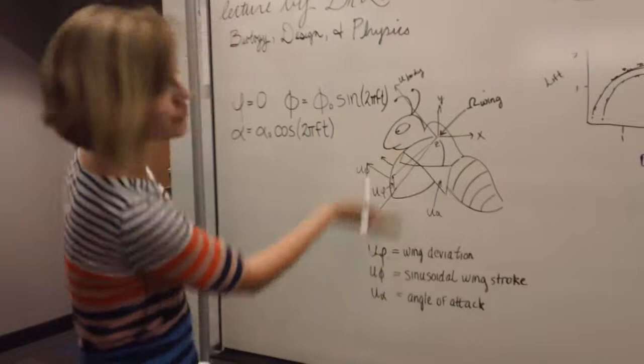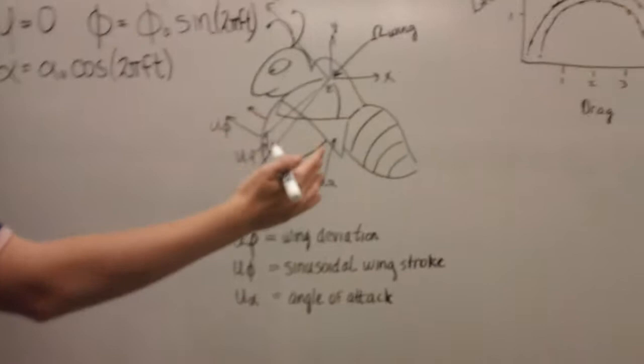But it's like u something is the wing deviation. That's right here. It's how much the wing goes up and down. Then you also have u phi, which is how much it goes forward and back.